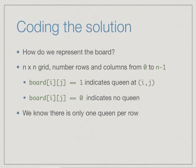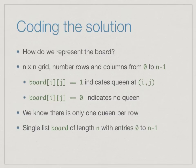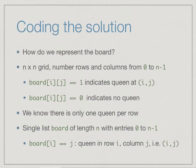Since there is only one queen per row, this n×n array has only n ones at any time. We can optimize by using a single list of length n, where the i-th entry records the column number. If board[i]=j, it means the queen in row i is at column j, so the queen is at position (i, j).